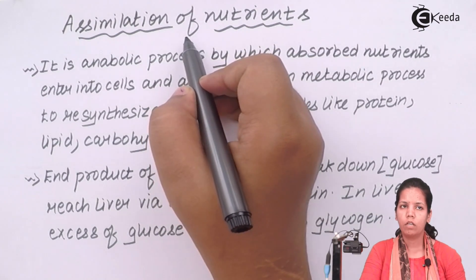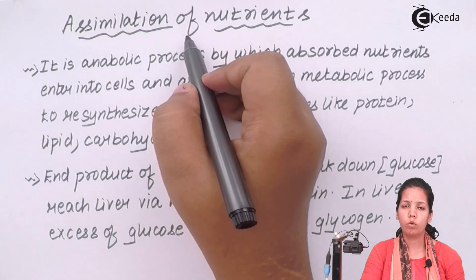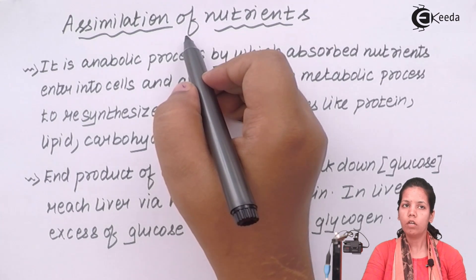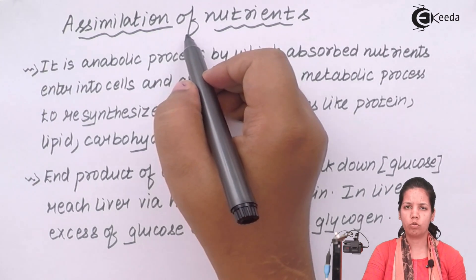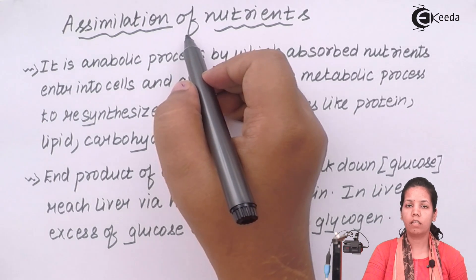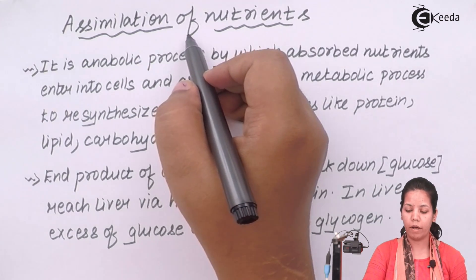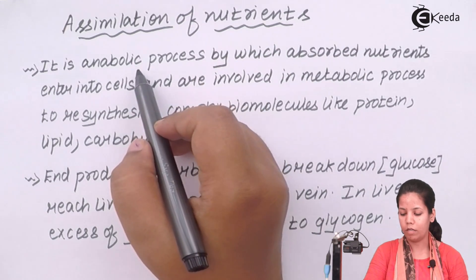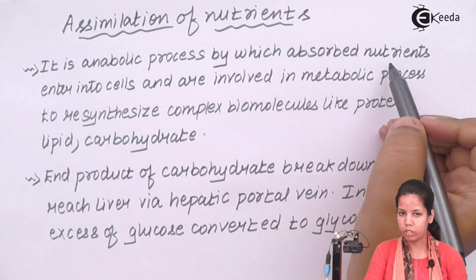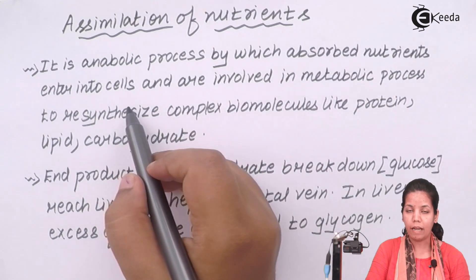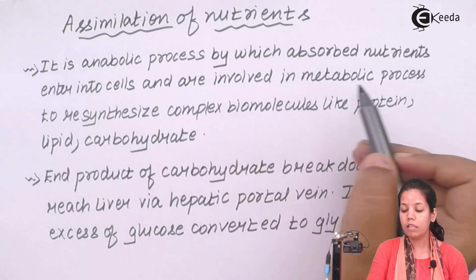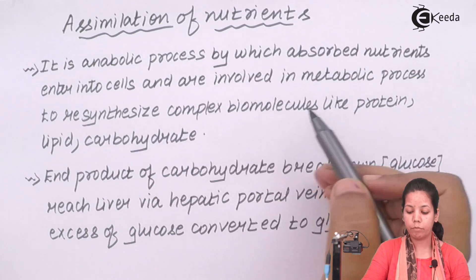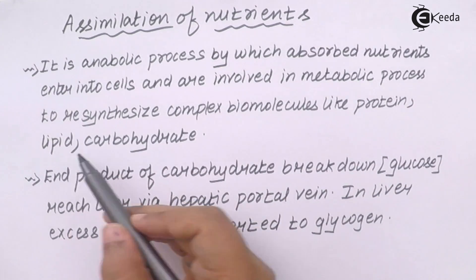Assimilation of nutrients means taking care of those nutrients which the body doesn't need right now but will eventually use later — basically restoring those nutrients in the body. It could be fats in fatty cells, glucose, or amino acids. Assimilation is an anabolic process by which absorbed nutrients enter into cells and are involved in metabolic processes to resynthesize complex molecules like proteins, lipids, or carbohydrates.